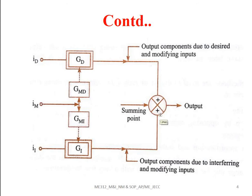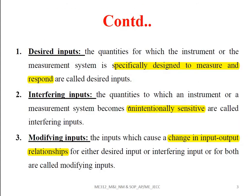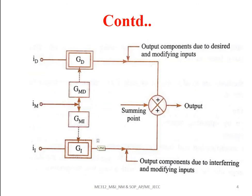In summary, the three input quantities are: desired inputs, interfering inputs, and modifying inputs. The total output will be the sum of the functions of the desired, modifying, and interfering inputs.